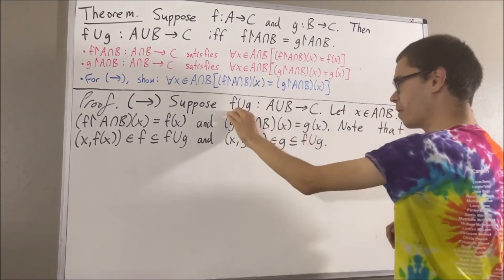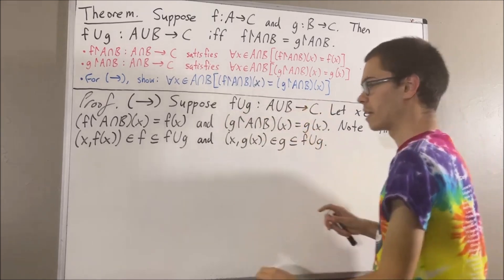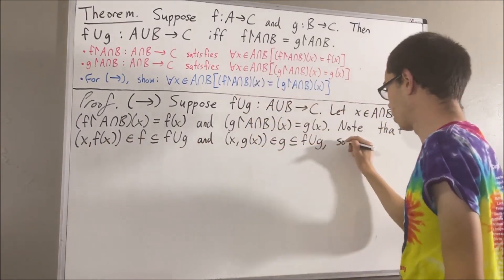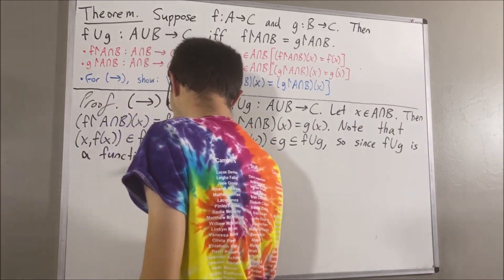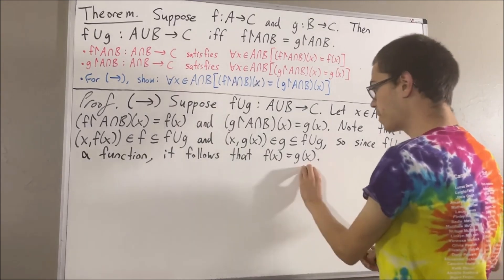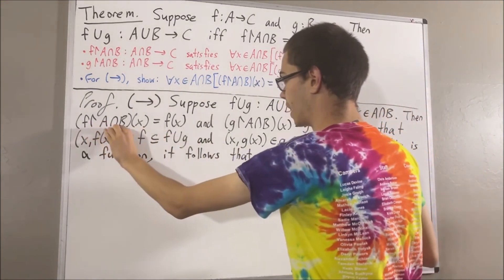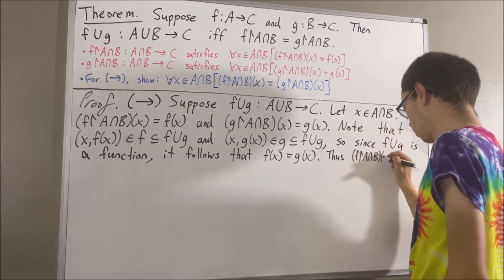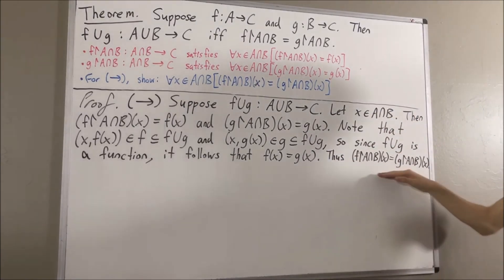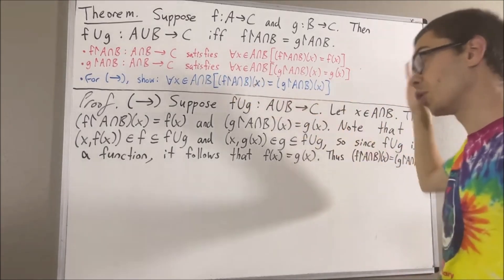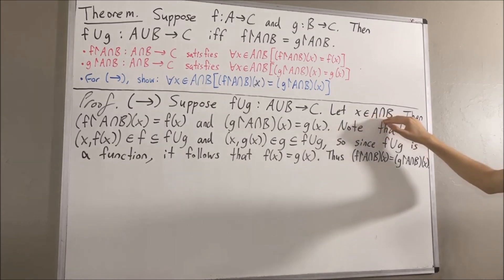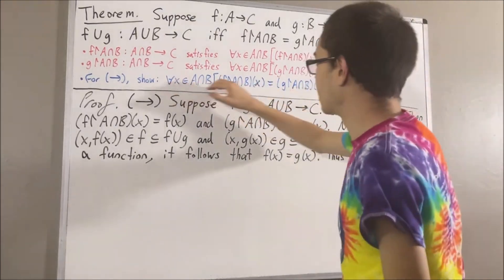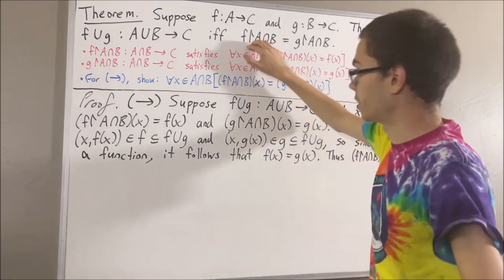Since the union of f and g is a function, the value x maps to must be unique. So f(x) must equal g(x). Since f(x) equals g(x), this tells us that the restriction of f to A∩B evaluated at x equals the restriction of g to A∩B evaluated at x, which is precisely what we wanted to show. Given any element x in A∩B, this holds, so we have proven the two restriction functions are equal.